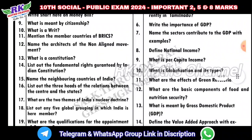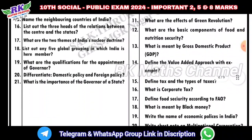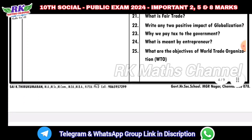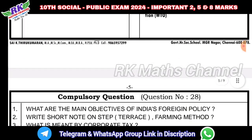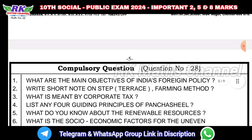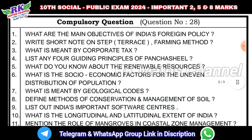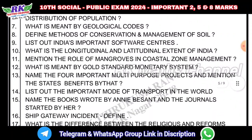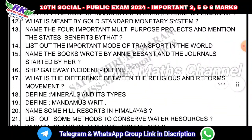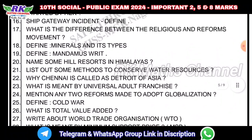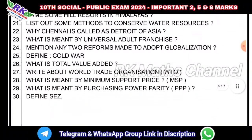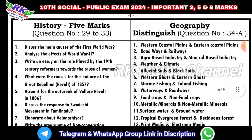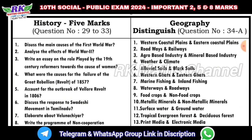Overall, these are 2-mark questions. This covers 21 questions and 25 questions from the book. Question number 28 is compulsory — compulsory.